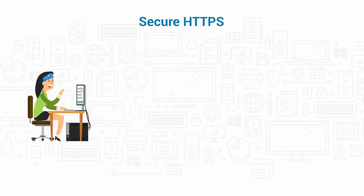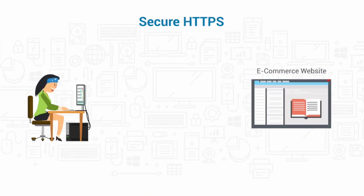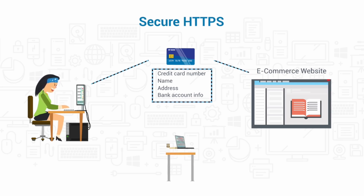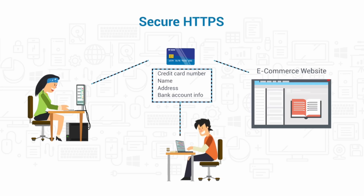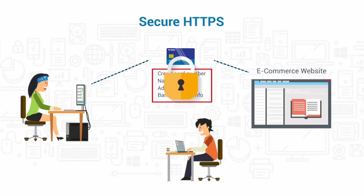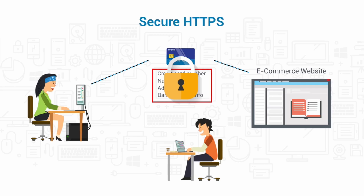Let's say you want to buy a book online from an e-commerce website. You send them some type of payment information, which is most likely a credit card number. If you use HTTP, your credit card number, name, and address are all broadcast as clear text over the internet. This information is all an identity thief needs to steal your identity, as well as the contents of your bank account. Using SSL or TLS, you can encrypt the HTTP communications so that they're indecipherable to anyone who doesn't have the decryption keys.